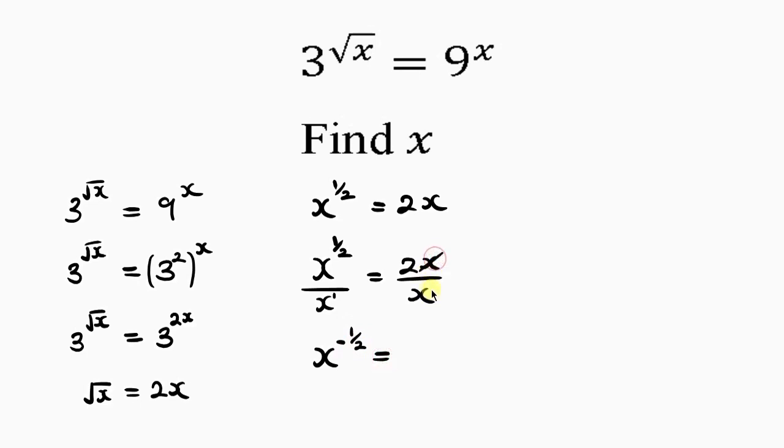You can see that X can go with X here, remaining 2. Now in order to get the value for X, I'm going to multiply the powers by negative 2. So this is X to power minus half. I'm going to multiply this by negative 2.